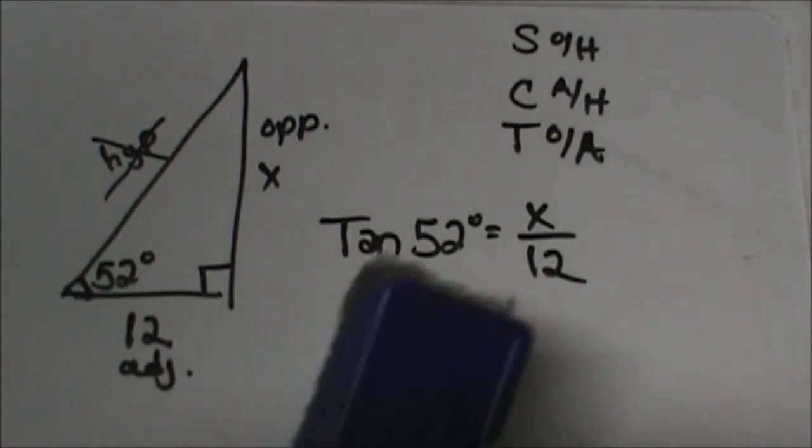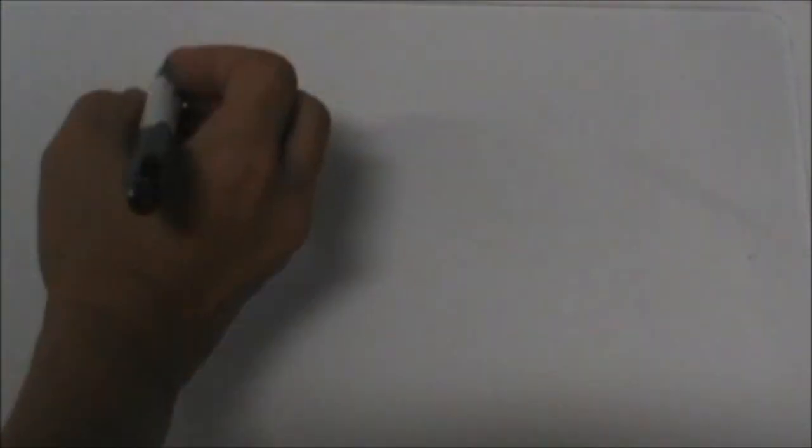Let's go down and practice setting these first three problems up. Not solving them yet, just setting them up. I will jot this down for later. We have the tangent of 52 is equal to 12 over x. Now let's look at the practice problem here.